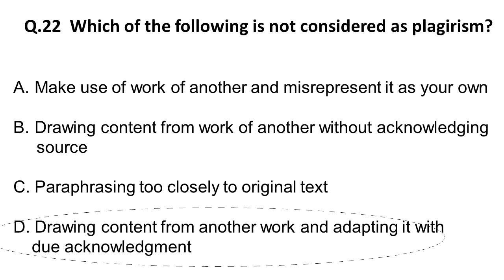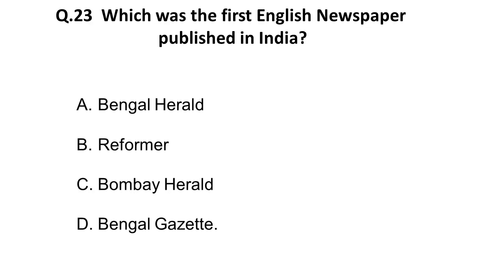Question 23: Which was the first English newspaper published in India? It was published in 1780 and it is the Bengal Gazette. I hope you answered this correctly.